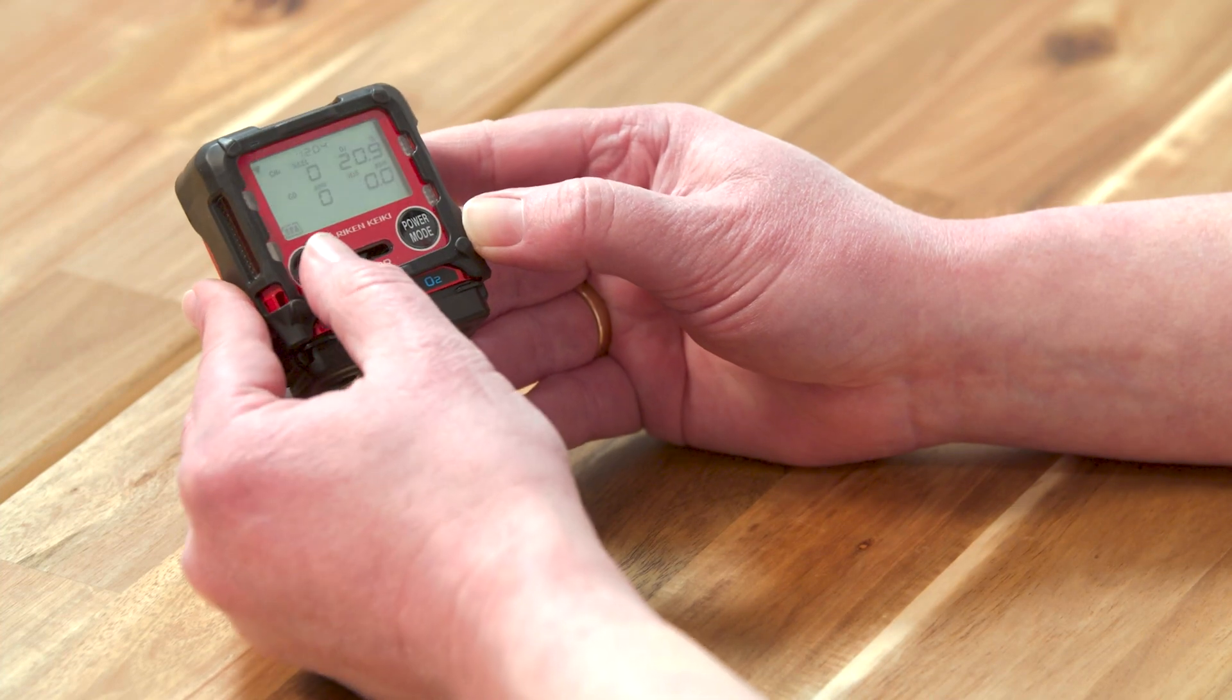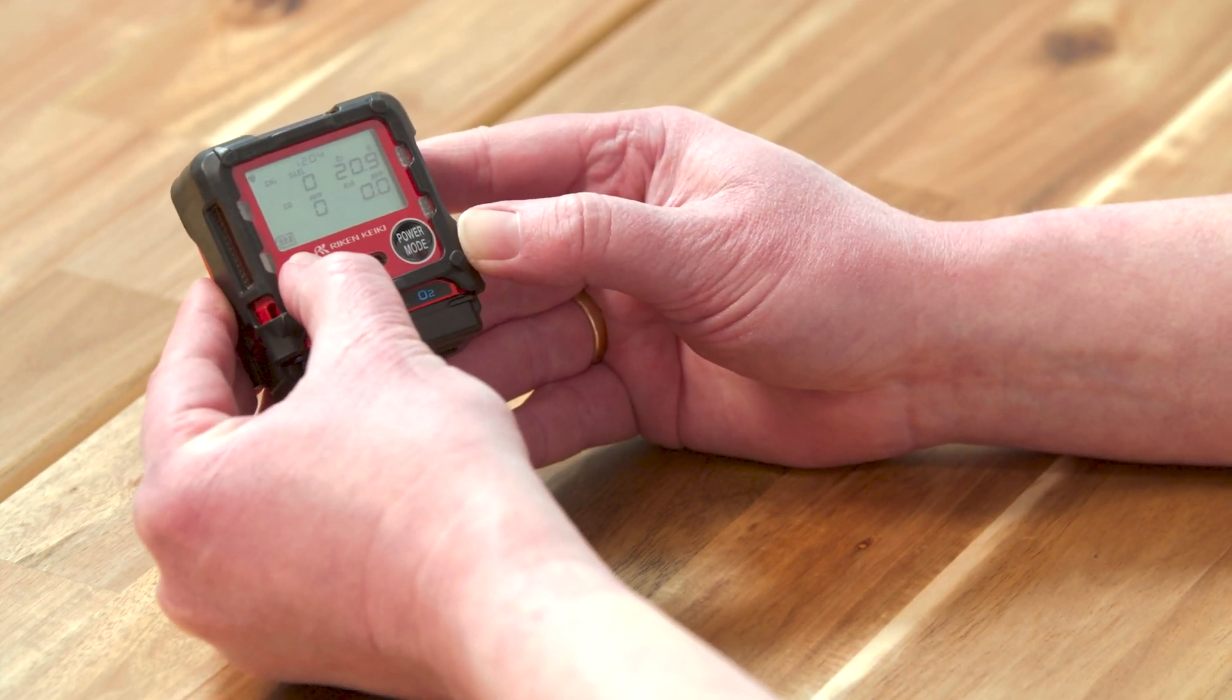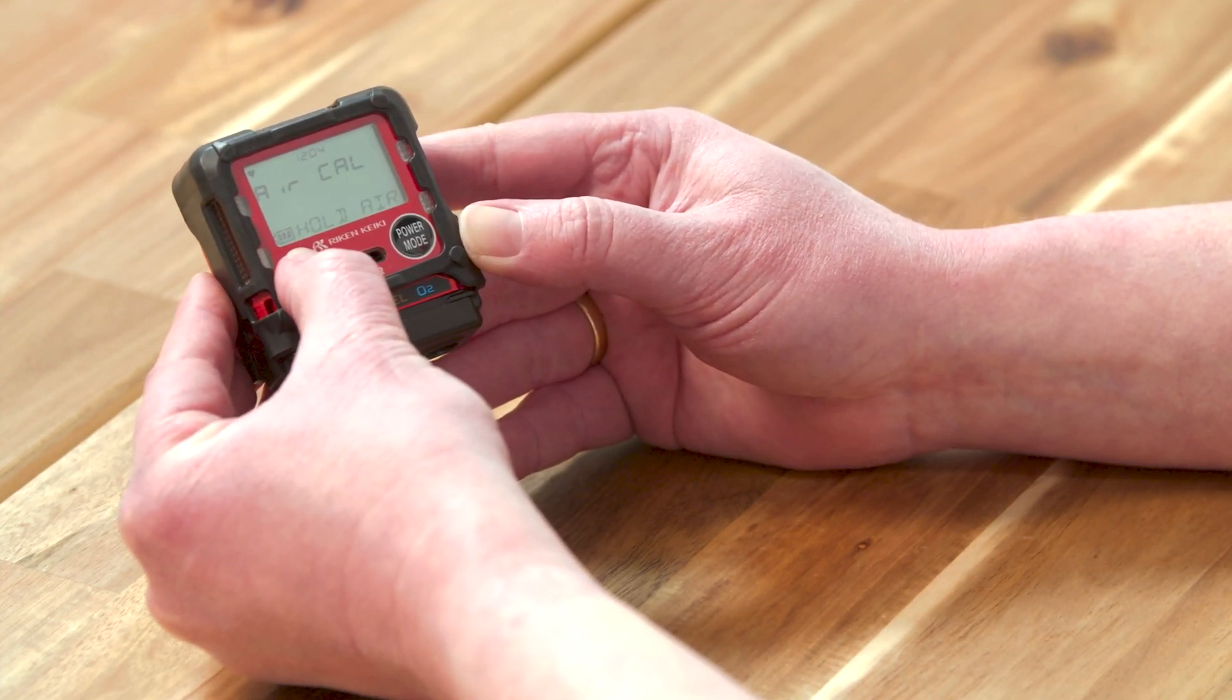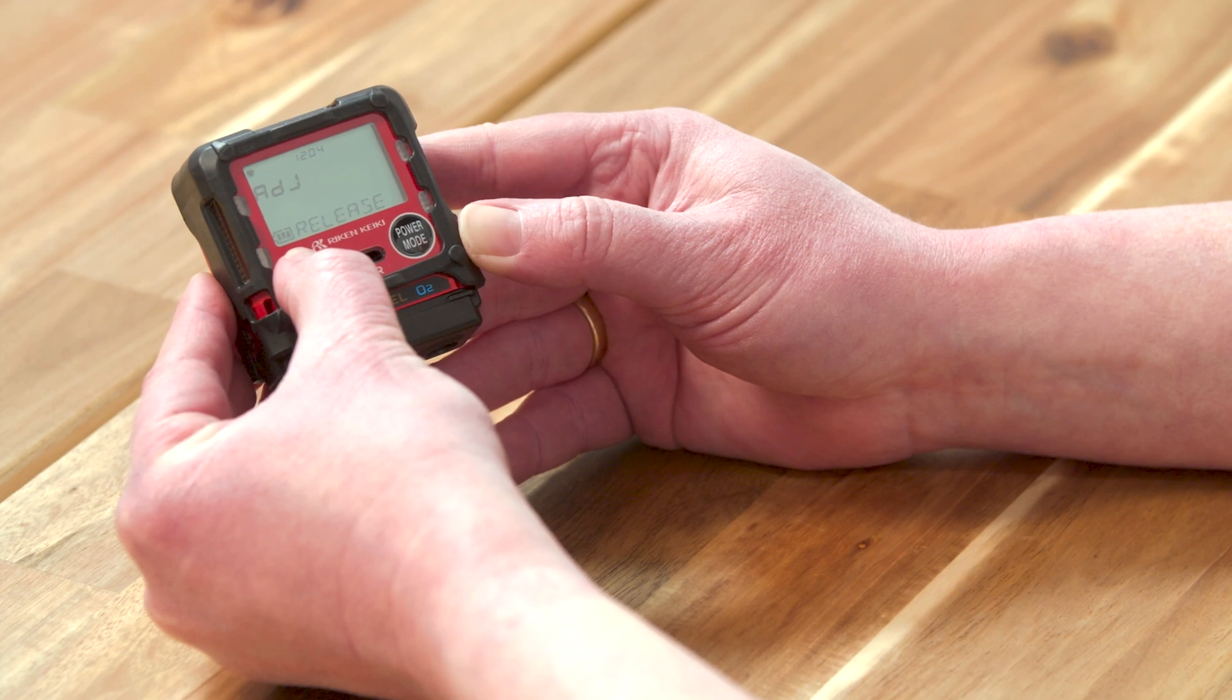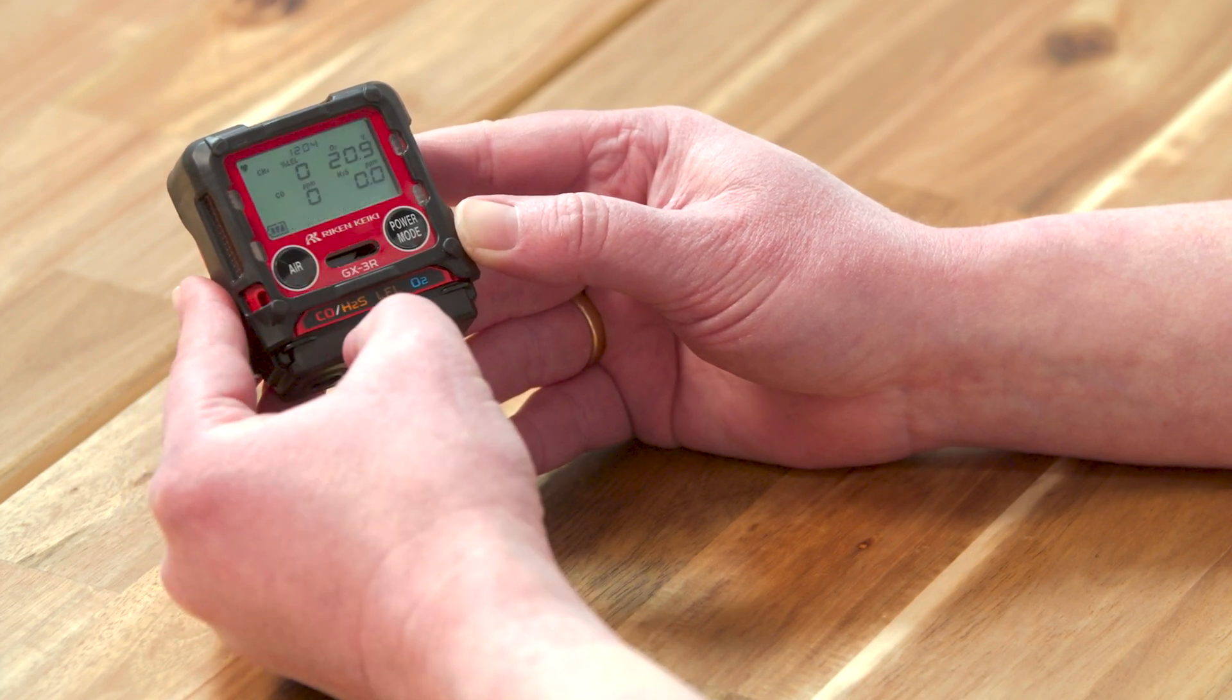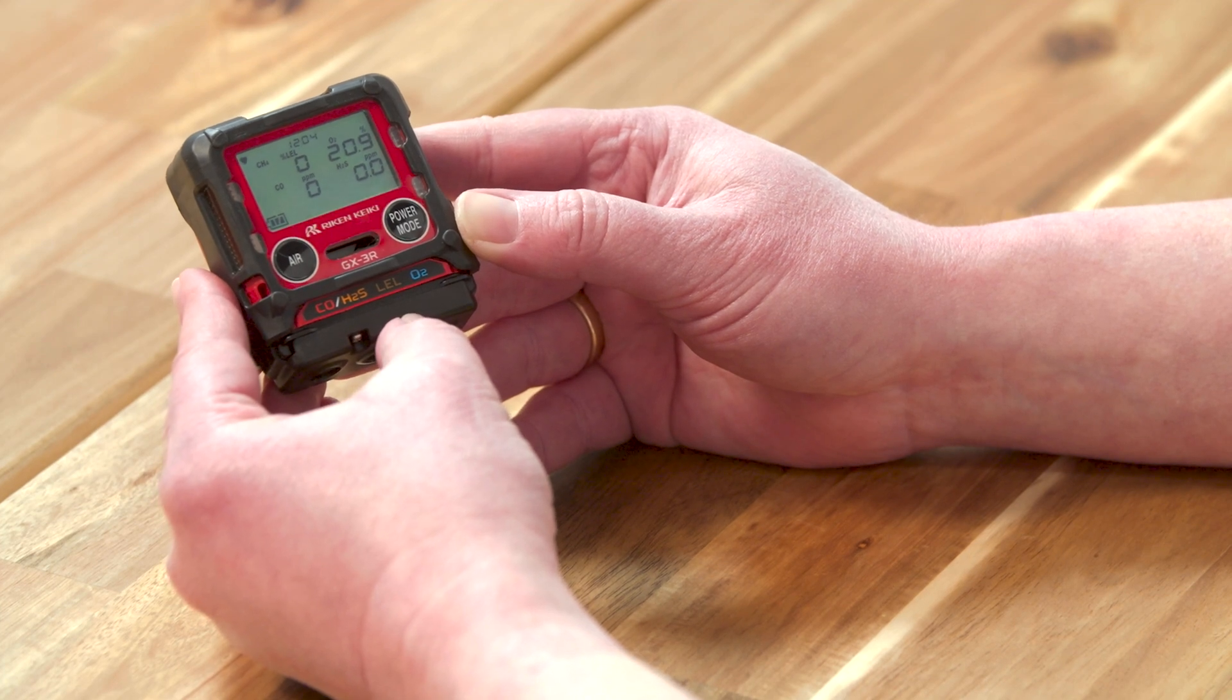Press and hold the air button. The screen displays air-cal hold air. After a few seconds the screen displays adjust release. Release the air button.